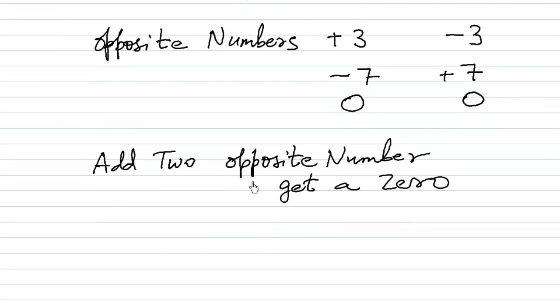That means if you are going to add 5 and minus 5, you are going to get a 0. So the addition of positive 5 and its opposite negative 5 will always give you a 0.